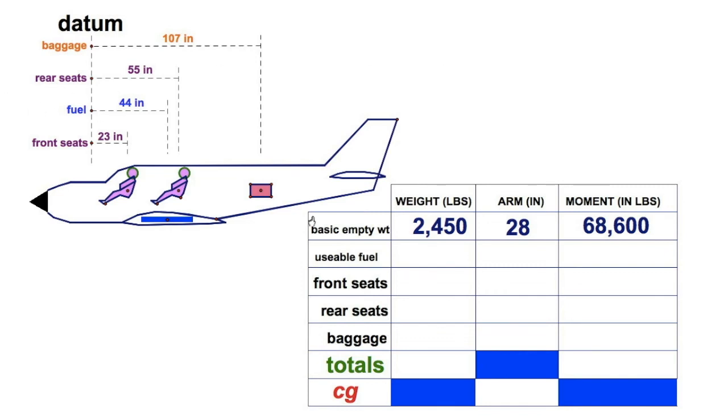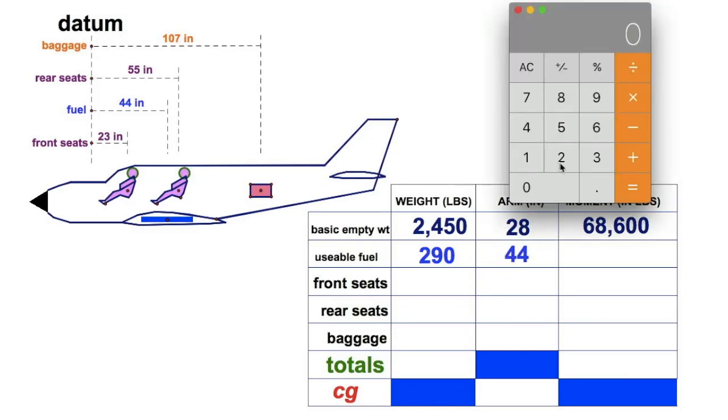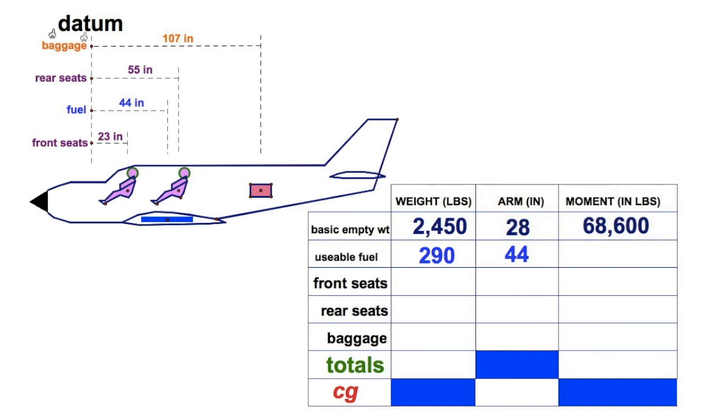A lot of hypothetical examples. I'm going to say first off for fuel, we're going to be on board with 290 pounds. Remember, that's pounds. You can convert your gallons, 6 pounds per gallon, roughly. We're going to take the arm, the given arm for fuel, 44. We're going to bust out the old calculator: 290 times 44. And you see that number's 12,760. Just marking it right there.